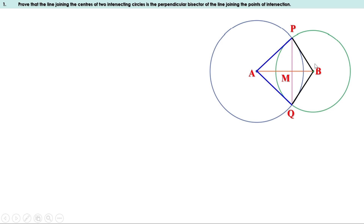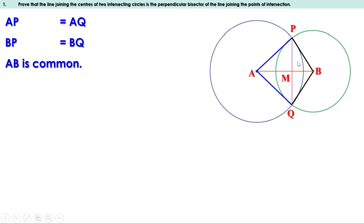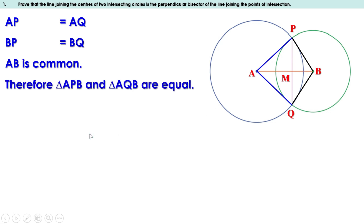Consider the triangles APB and AQB. AP and AQ are equal as they are radii of the circle with center A. Similarly, BP and BQ are also equal because they are radii of the other circle. AB is common for both these triangles. That means the three sides of triangle APB are equal to the three sides of triangle AQB. Therefore the triangles are equal. When two triangles are equal, their sides and angles are also equal. The angles opposite to equal sides are equal. These two sides are equal, so the angles opposite to them are also equal. That is, angle PAB equals angle QAB.